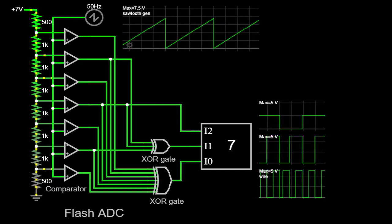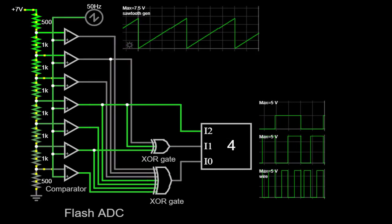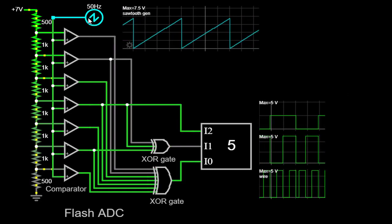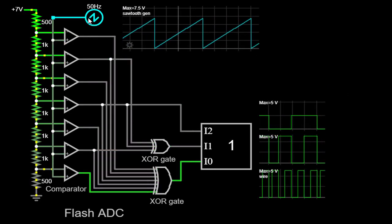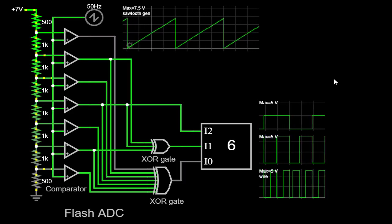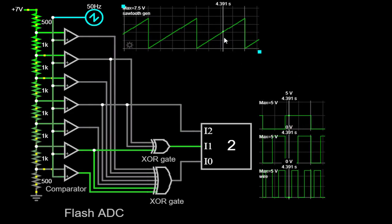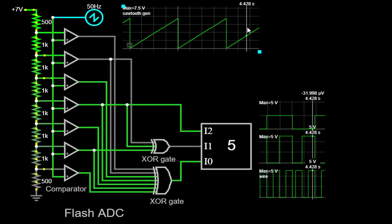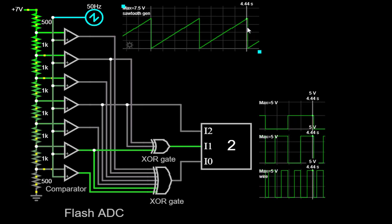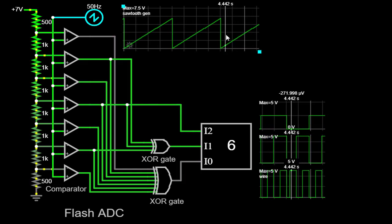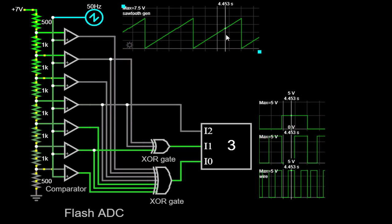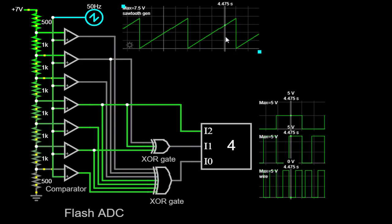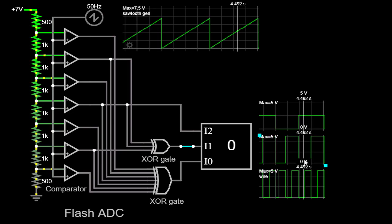To provide a concrete example for our simulation, we have selected a 50Hz sawtooth waveform with an amplitude of 3.75V as our input signal. The sawtooth waveform is a type of periodic waveform that starts from a specific value and linearly ramps up until it reaches its peak, at which point it resets back to its initial value and repeats the process. By utilizing a sawtooth waveform, we can observe how the Flash ADC effectively converts the varying analog voltage into a corresponding digital representation.